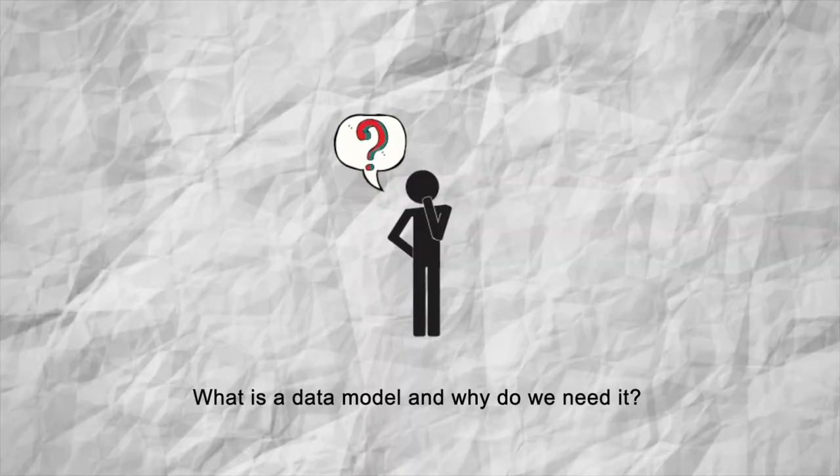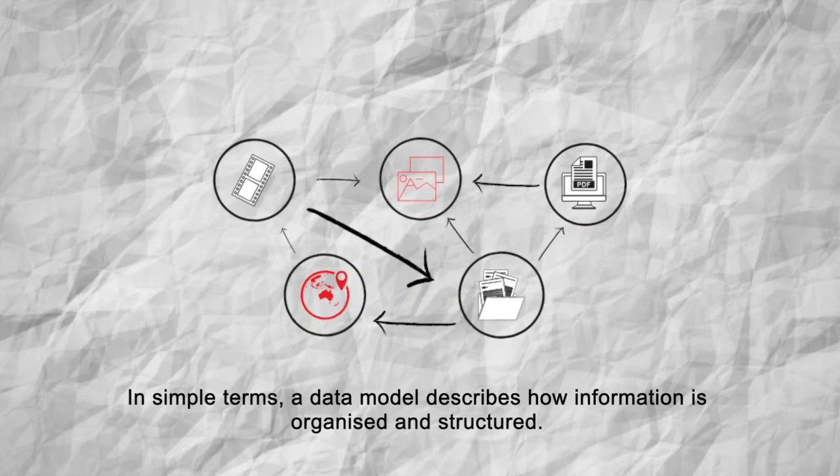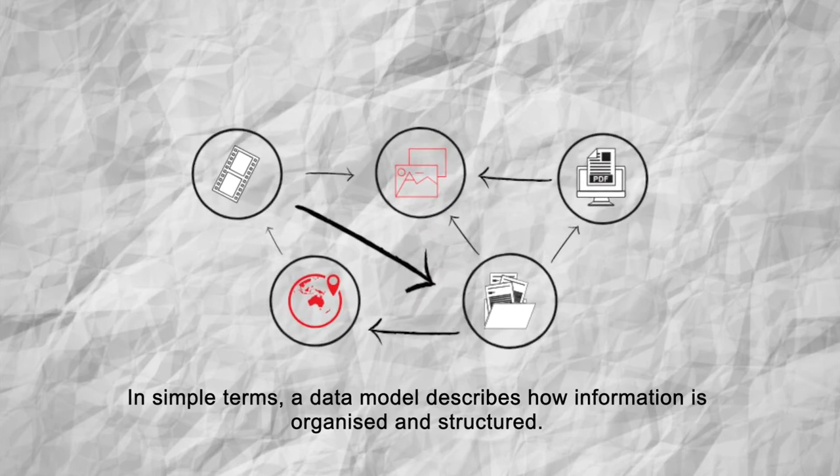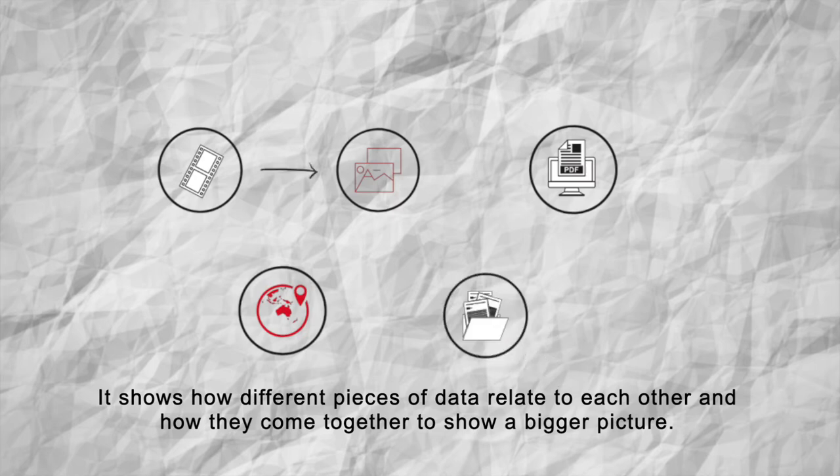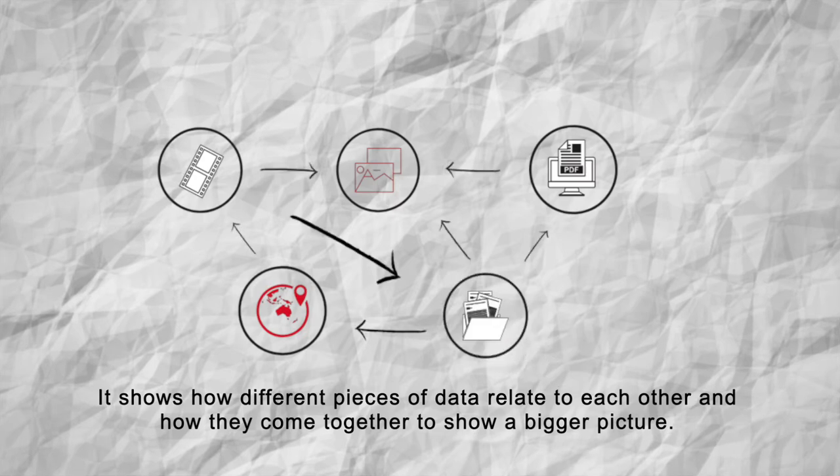What is a data model and why do we need it? In simple terms, a data model describes how information is organized and structured. It shows how different pieces of data relate to each other and how they come together to show a bigger picture.